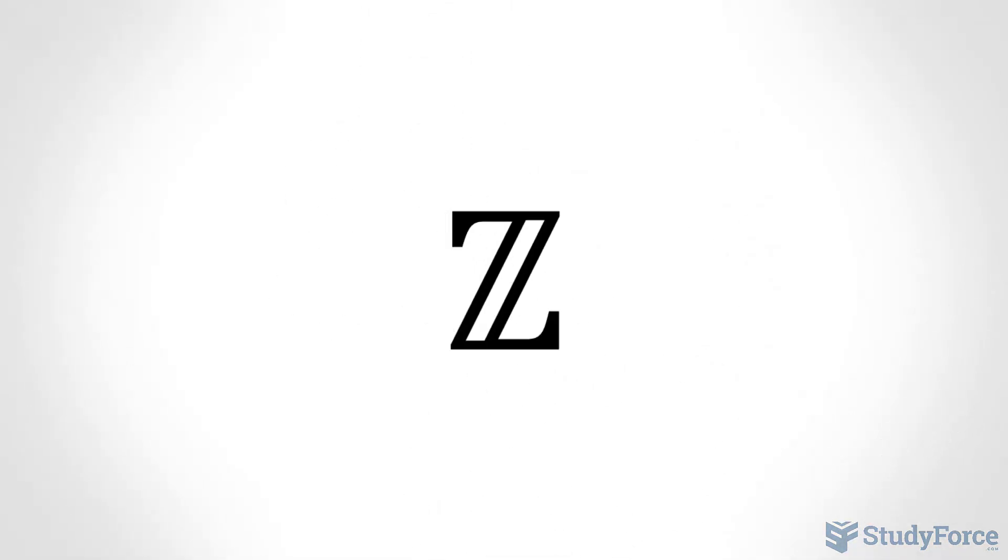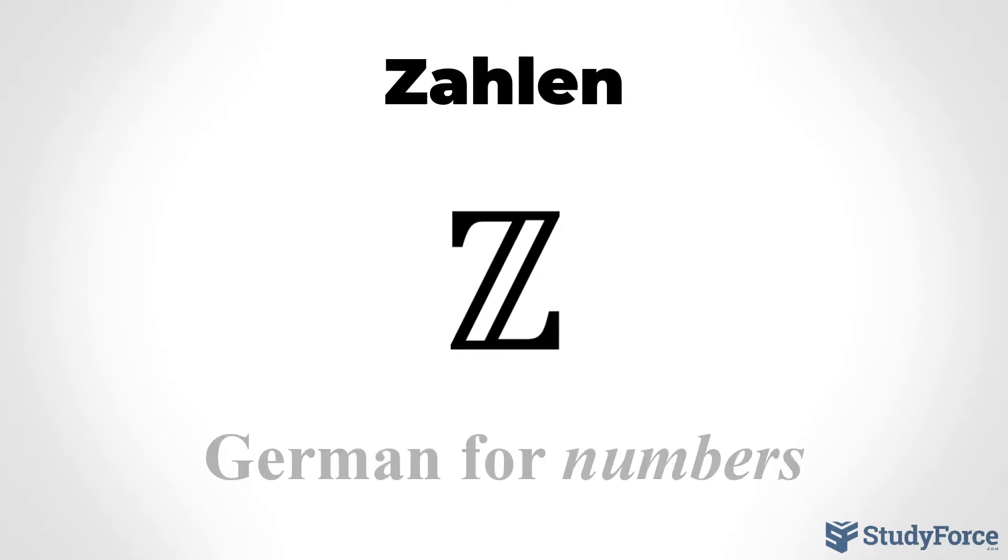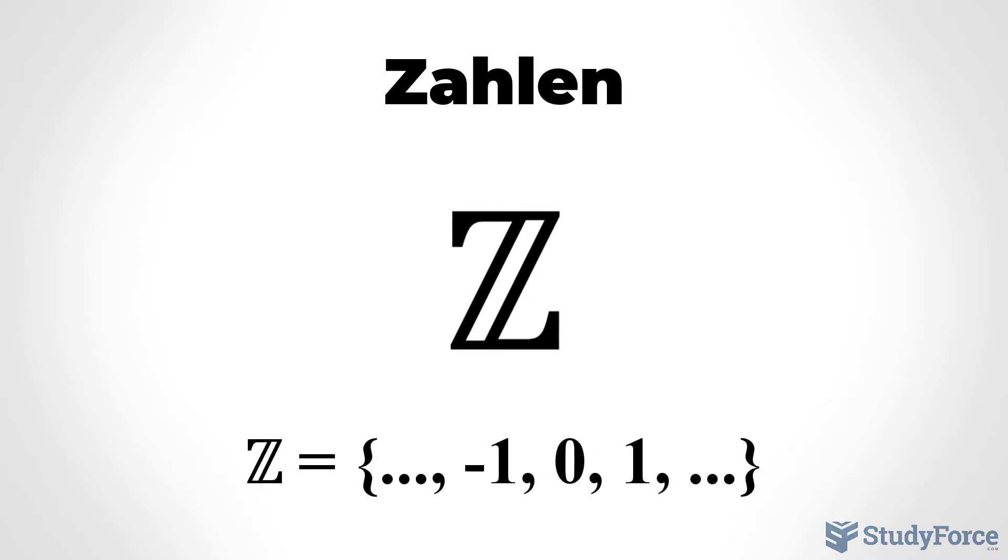Next we have this weird looking Z. This is the Zahlen symbol. Zahlen means numbers in German, and it is used to denote the set of all integers. In fact, any time you have a double struck letter like this, the symbol usually denotes a number set. Another popular one being this R, which denotes all real numbers.